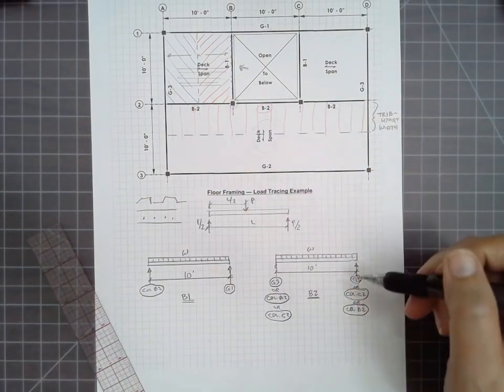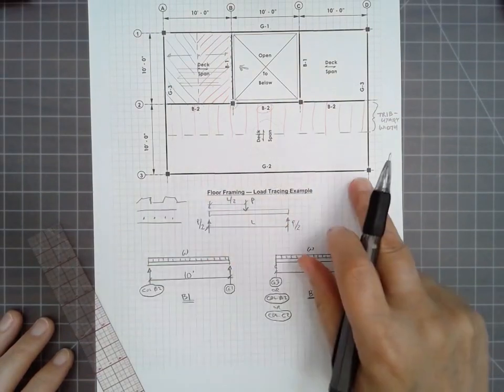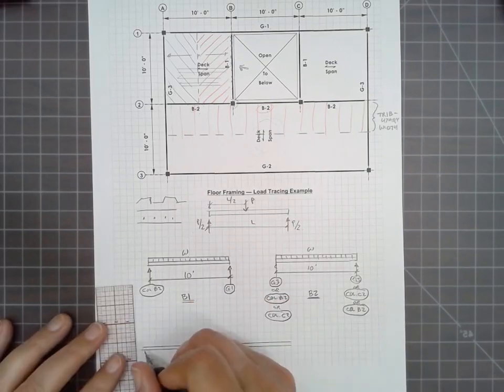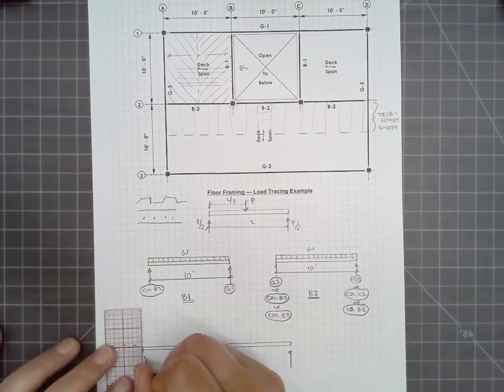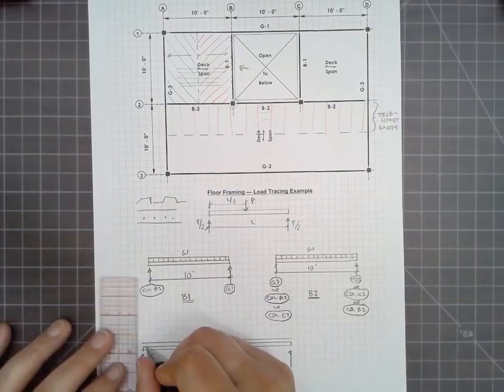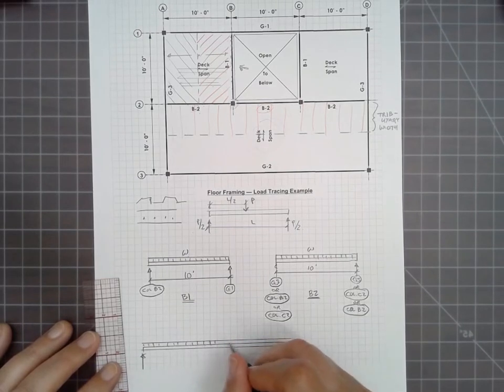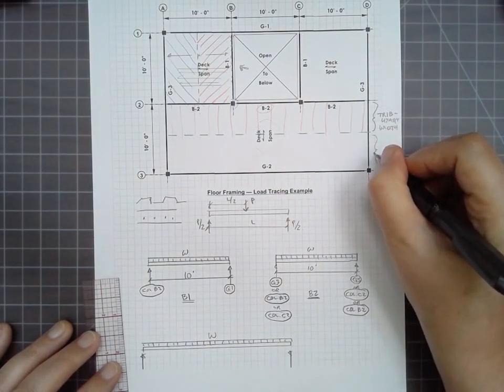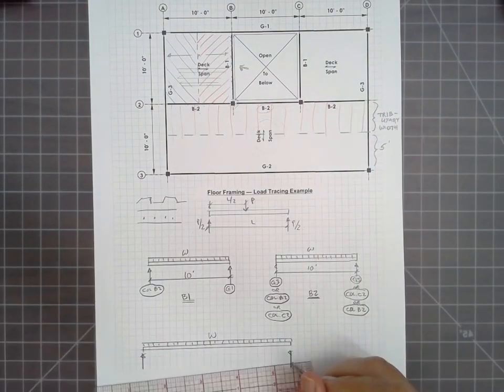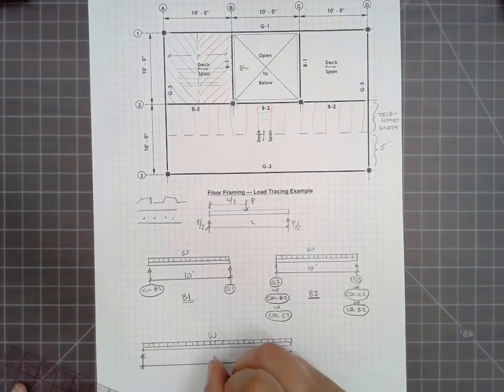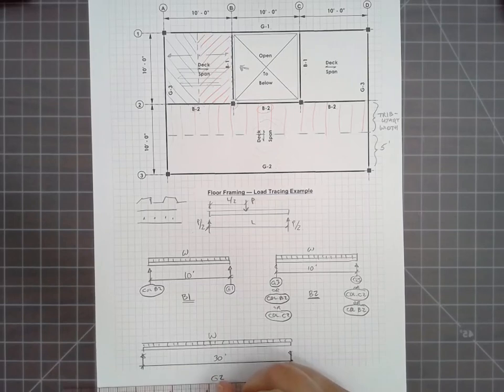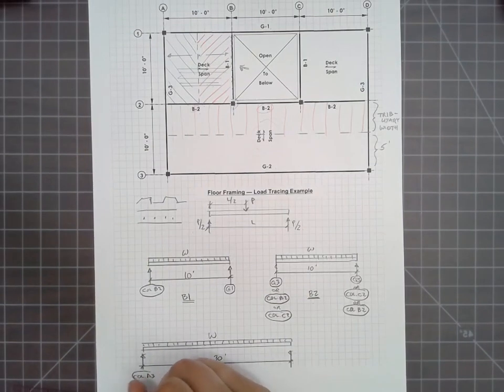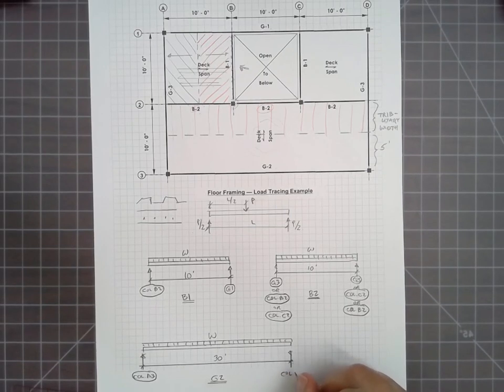Member G2 looks very much the same as member B2, except it's much longer. It's 30 feet long. But it too actually has exactly the same load as member B2 because it has the same tributary width, 5 feet long. But its span is 30 feet. G2 is supported at A3 and column D3.